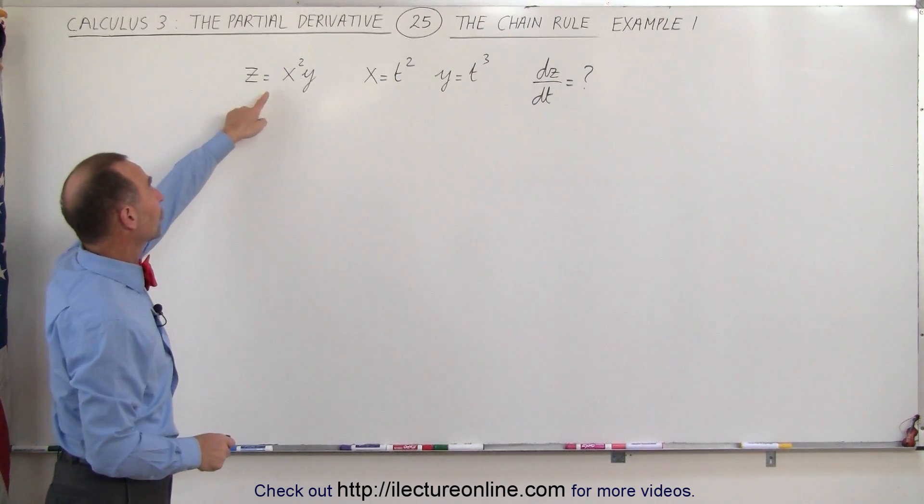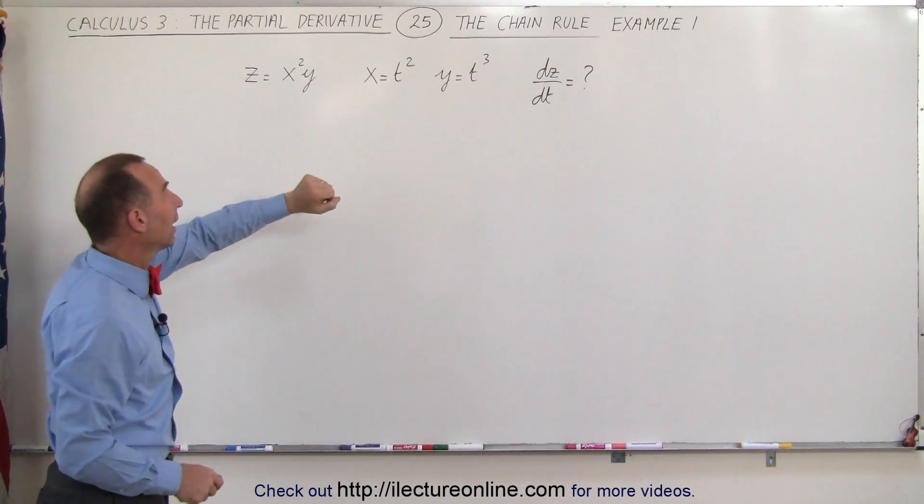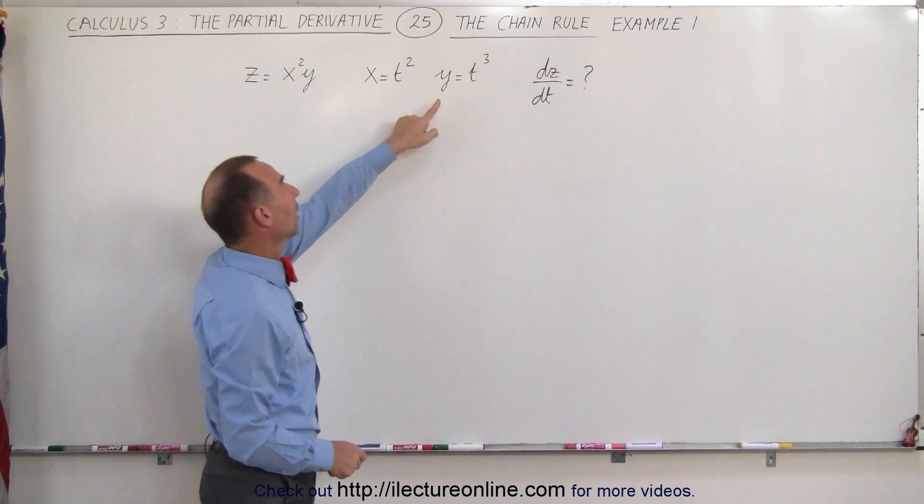The function z is a function of two variables, x and y, and then x is a function of t, and so is y.